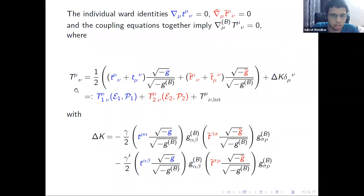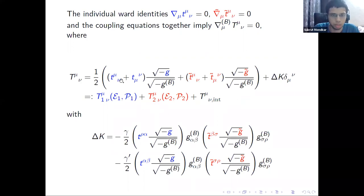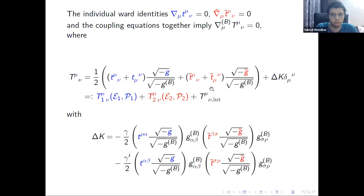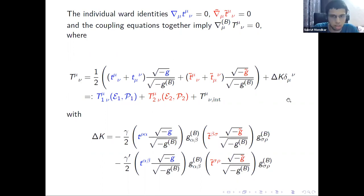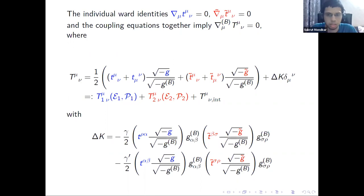The full system energy-momentum tensor T^{mu nu} is just a polynomial of the subsystem energy-momentum tensors t^{mu nu} and t-tilde^{mu nu}. If the subsystems are described by fluids, then in order to describe the full system, we want this expression to only contain operators that can be described within the hydrodynamics of the two sectors. The democratic couplings ensure that this is the case, which would not hold in general.